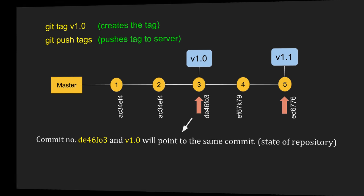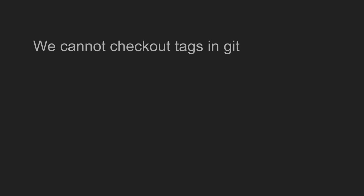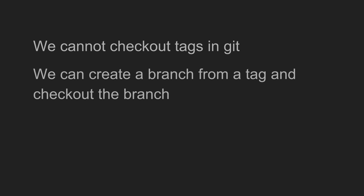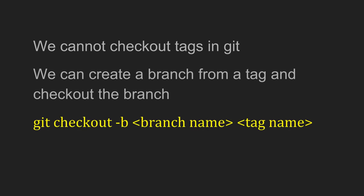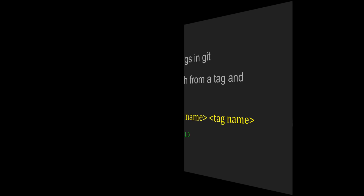How do you check out tags in Git? There is no concept of directly checking out tags in Git. However, you can create a branch from a tag and then check out that branch. For example, if you want to check out tag version 1.0, you say 'git checkout -b' and give a branch name followed by the tag name. This will create a branch with the same state of the repository as it was when tagged at v1.0.